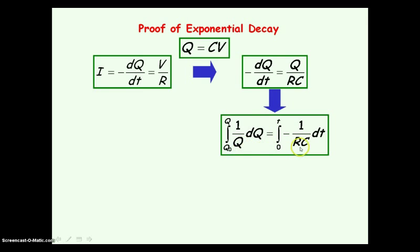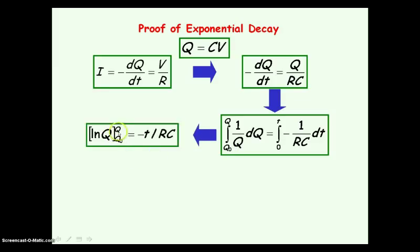We are now going to integrate both sides of the equation. On the time side we integrate with respect to time t, with limits from time equals 0 to time t. On the charge side we integrate with respect to Q, with corresponding limits from initial charge Q₀ at time 0 to charge Q at time t. Integrating 1 over Q gives the natural log of Q, evaluated between limits Q and Q₀. Integrating the right-hand side — since there are no t terms — we just introduce t. Substituting the limit of 0 gives zero, so we are left with t divided by RC.